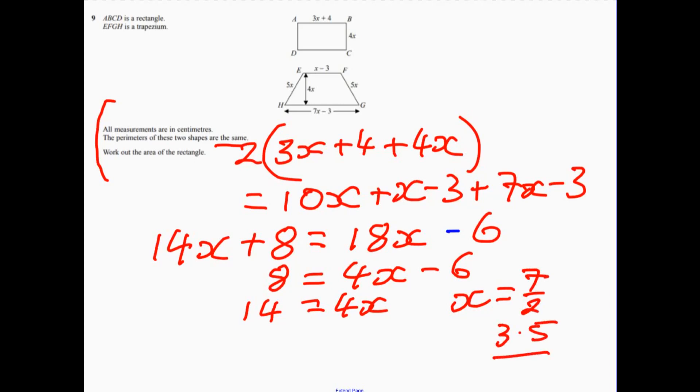Now it just says work out the area of the rectangle. Well, let's think about the dimensions of the rectangle first of all. So we've got our rectangle, and we've got one length is 4x. So 4 multiplied by 3.5, so that's going to be 14. And then I've got to work out the length, which is 3x plus 4. So 3x plus 4 is 14.5.